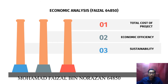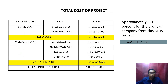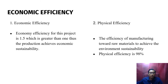The economic analysis covers total cost of project, economic efficiency, and sustainability. Total cost of production is the sum of fixed cost and variable cost. Fixed cost does not change with production rate, while variable cost increases or decreases with production rate. The total project cost is RM 574,360.20, targeting 50% profit for the company. The total selling price to the client is RM 861,540.30.